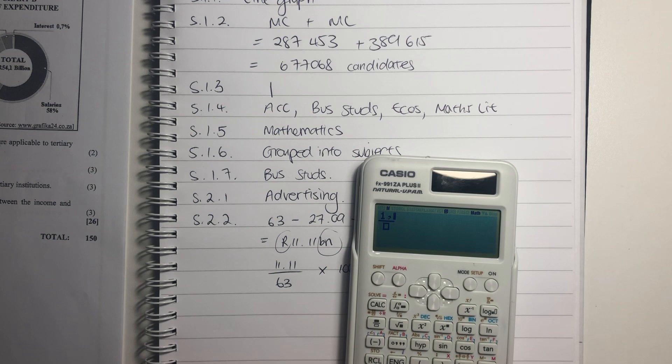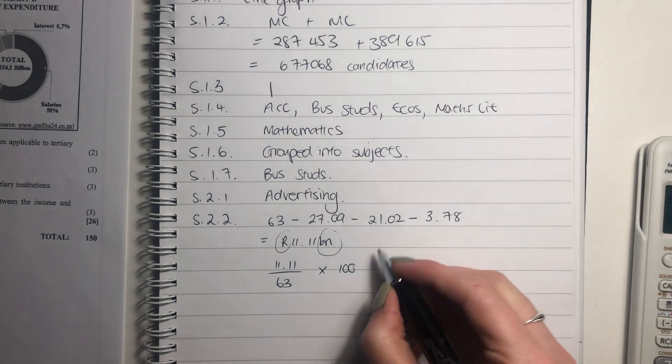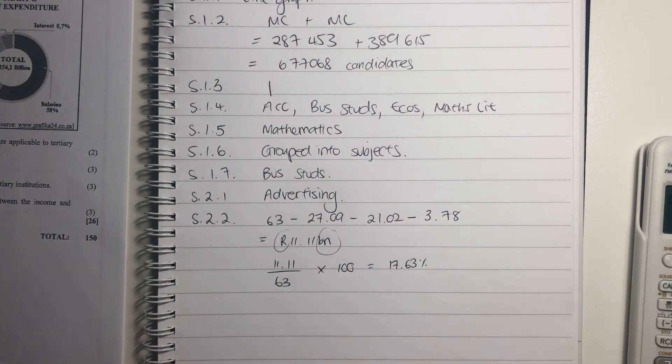So now we have to say 11.11 over 63 times by 100 because that's the percentage. Put whatever your answer was there. Over 63 times 100, and it is going to be 17.63%. Generally you round to two decimal places. But it depends on your preference. Generally it's two. I wouldn't put more than three. Just make sure that you're rounding off and not writing decimals forever, and also remember your percentage sign.